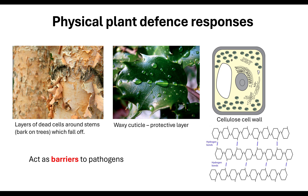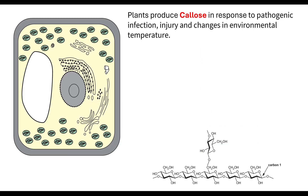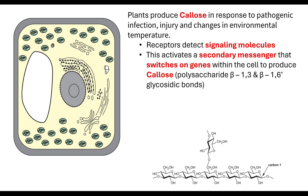If a pathogen does get in, the plant can produce a polysaccharide called callose. A pathogenic infection, injury, or changes in environmental temperature can cause the plant to produce callose. Receptors detect signalling molecules, which can come from the pathogen itself or from damaged areas within the plant. These signalling molecules activate a secondary messenger, which switches on genes within the cell, causing the cell to start producing callose.